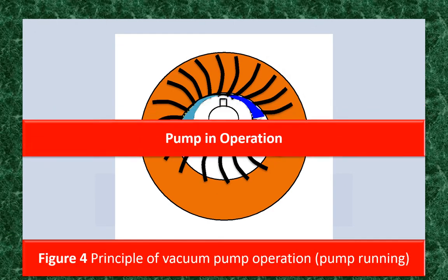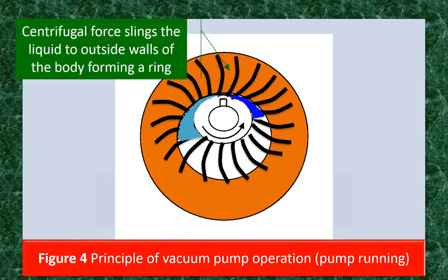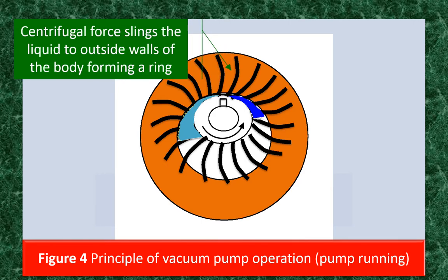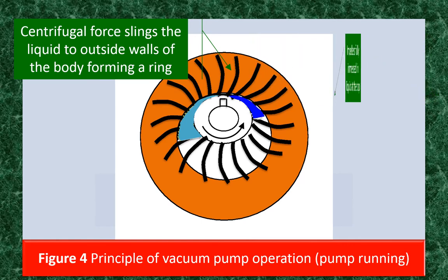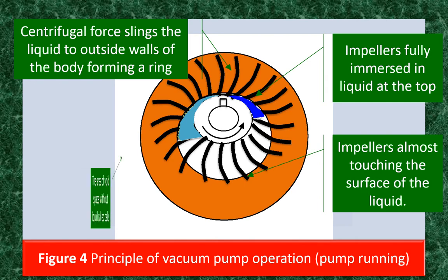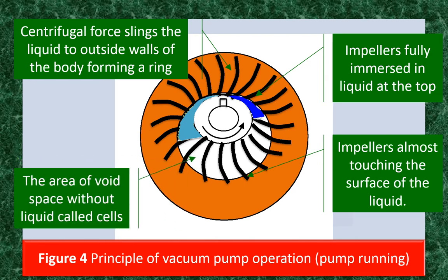When the pump starts, the impeller slings the liquid sealant by centrifugal force to the outside walls of the body, forming a ring of liquid at the outside walls. Because the impeller is offset from the body, some of the blades are fully immersed in liquid and some are almost out of the liquid. The area of void space without liquid is sealed off between the liquid — hence the term sealant — and between the impeller blades, called an impeller cell.